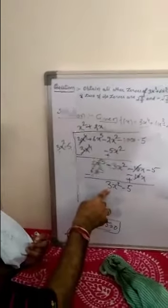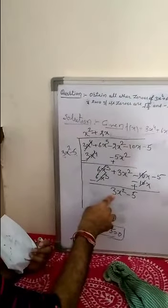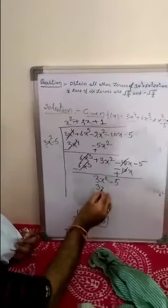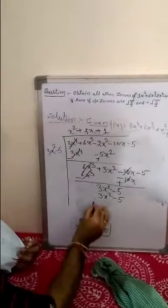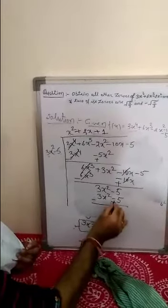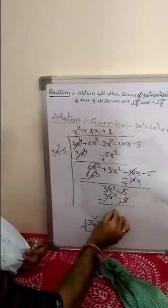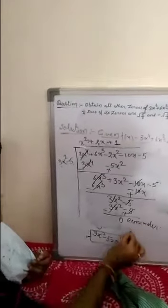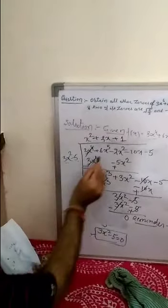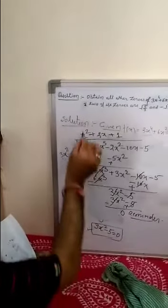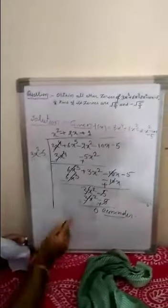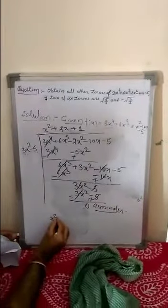Next, 6x³ divided by 3x² gives 2x. Then 2x multiplied by the divisor gives 6x³ - 10x. Change the sign: 6x³ cancels and -10x + 10x cancels, leaving 3x² - 5. Then 3x² divided by 3x² gives 1; 1 multiplied by the divisor gives 3x² - 5. The remainder is 0, so the quotient is x² + 2x + 1.